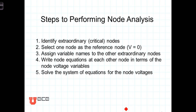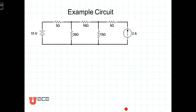Let's go ahead and review the steps to node analysis before we do an example. When analyzing a circuit using node analysis, the very first thing you do is identify the extraordinary or critical nodes in the circuit. Then choose one of those nodes to be the reference node where the voltage is going to be zero. Assign variable names to the other extraordinary nodes. Then write Kirchhoff's current law or KCL equations at each of the other nodes in terms of the node voltage variables, and then finally solve the system of equations that result.